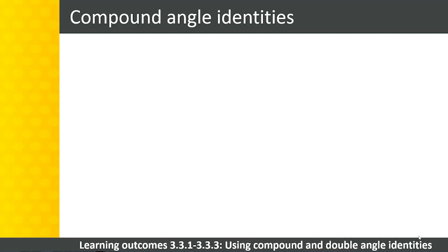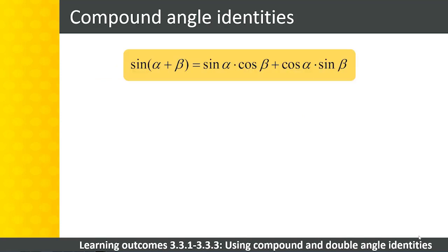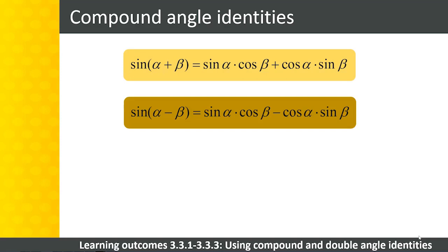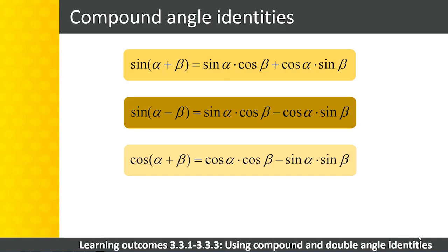Here are the identities: sin(α + β) = sin α · cos β + cos α · sin β; sin(α − β) = sin α · cos β − cos α · sin β; cos(α + β) = cos α · cos β − sin α · sin β.